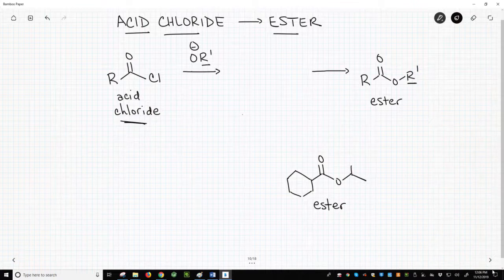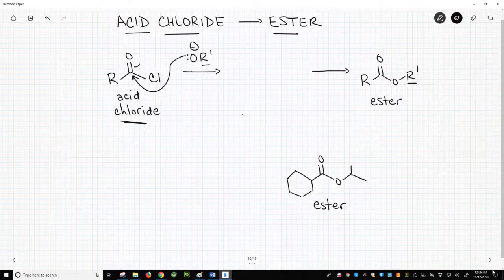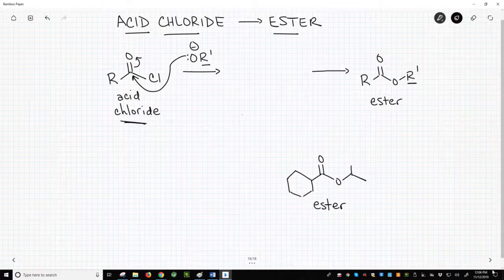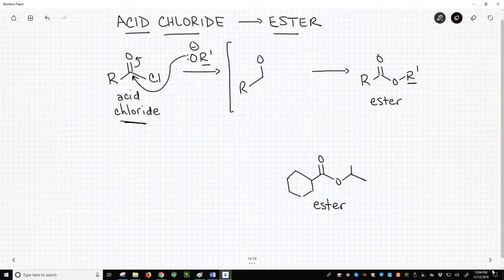The alkoxide is a nucleophile. It attacks the carbonyl of the acid chloride. Any time we attack a carbonyl, we get a tetrahedral intermediate.